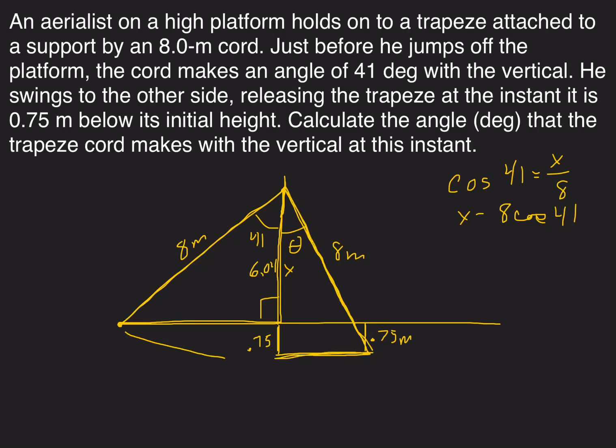I know this hypotenuse from here all the way down is eight meters, still the length of the cord. And I actually know what this side is over here now, because it's 6.04 from here to here, and then there's 0.75 added on, so that total is 6.79.